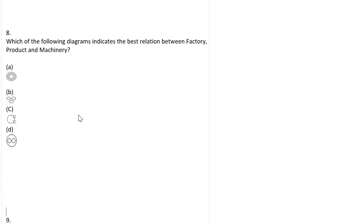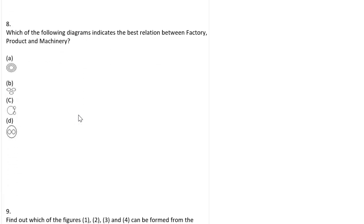Which of the following diagrams indicates the best relation between factory, product, and machinery? Factory is the whole thing; product and machinery are under the factory. So the option is D.